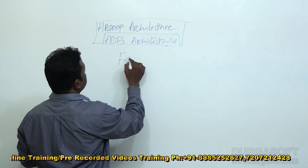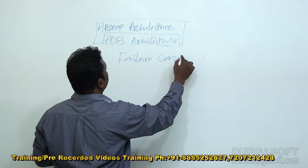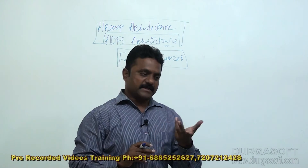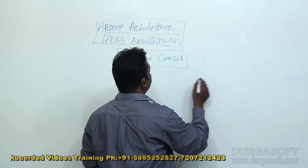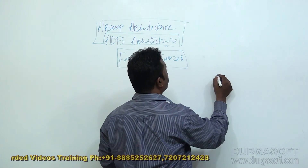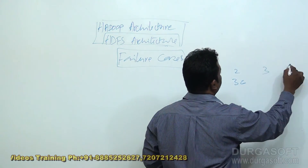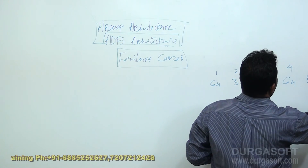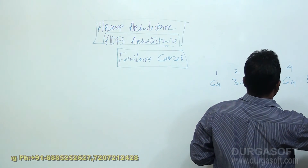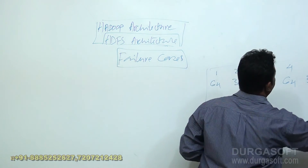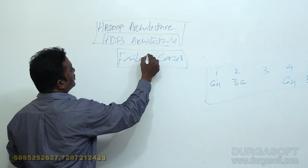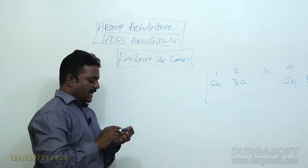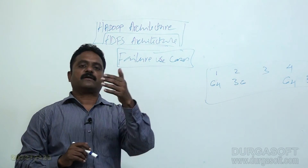Let us look at failure use cases now. When you are writing a file on a cluster — say we have 64 and 36 — this is our cluster. What are the different scenarios that would come into picture when you are writing or reading the data?